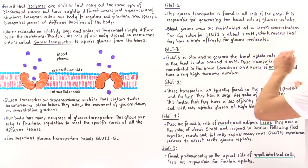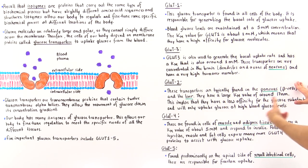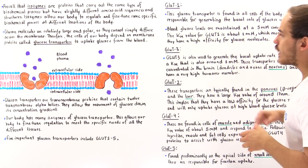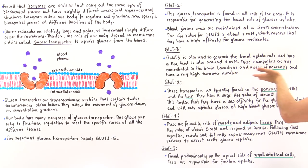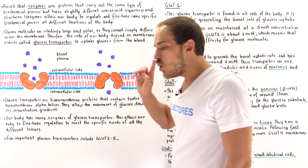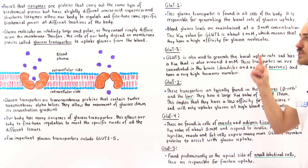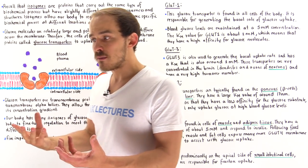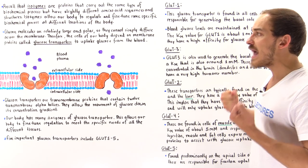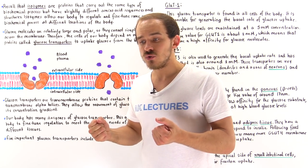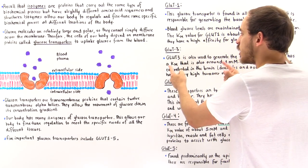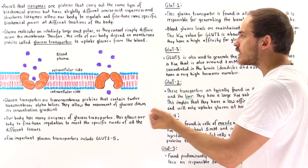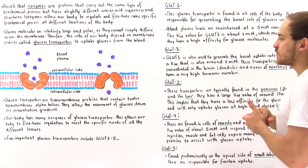GLUT3 also generates the basal uptake rate and is found predominantly in nerve cells inside our brain — in the neurons, specifically in the membranes of dendrites and axons. It's important that we have a high concentration of GLUT3 in the brain because brain cells depend on glucose and are arguably some of the most important cells in our body. They need to get glucose first before any other cell, which is why GLUT3 — with its Km value of around 1 millimolar — is very effective at binding glucose and bringing it into the cytoplasm of the nerve cells.